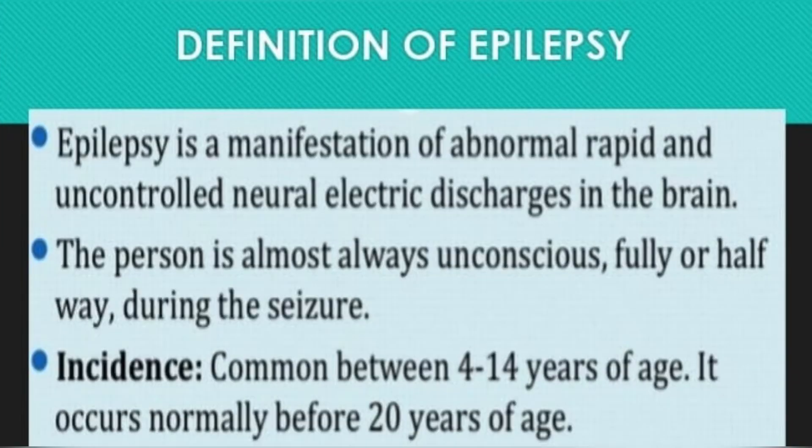Then I will talk about the definition of epilepsy. Epilepsy is a manifestation of abnormal, rapid and uncontrolled neuro-electric discharge in the brain. The person is almost always unconscious, fully or halfway during the seizure. Incidence is common between 4 to 14 years of age, and it occurs normally before 20 years of age.